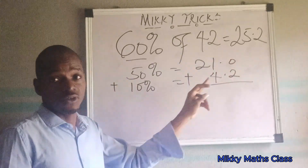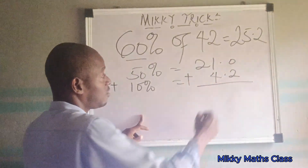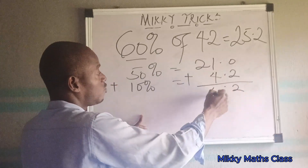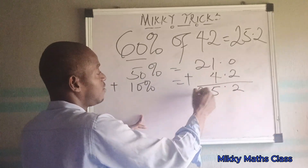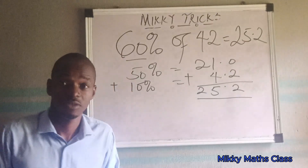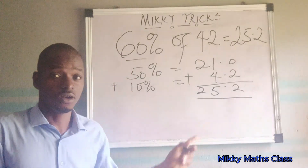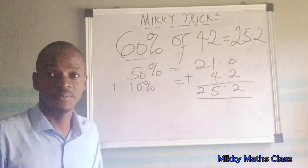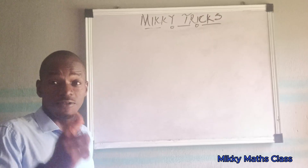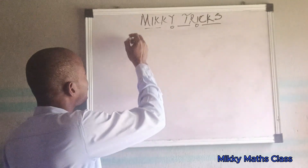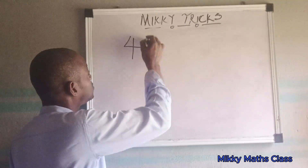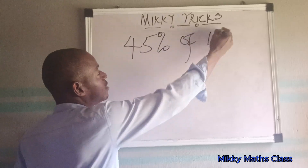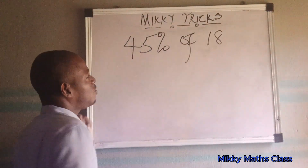Add those two together: 21.0 plus 4.2 gives us 25.2. Now let's look at the next question: 45% of 18. How do we figure that out?